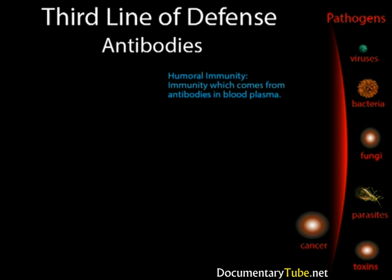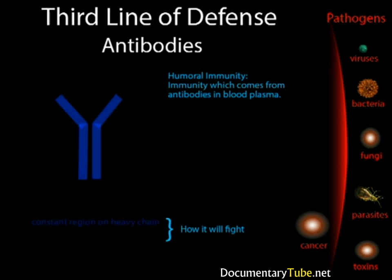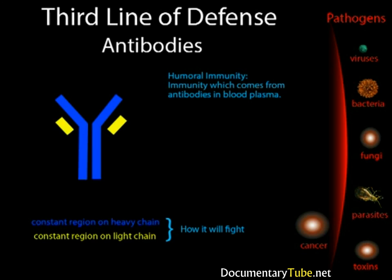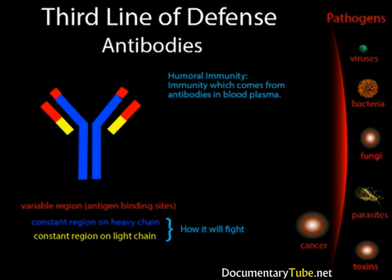Humoral immunity is an immunity which comes from antibodies in the blood plasma. Antibodies are proteins — basically made of four polypeptide chains: two identical heavy chains and two identical light chains. These chains are arranged in a Y shape. The parts in red are variable regions — these designate what invader the antibody will fight. They are antigen binding sites that allow the antibody to grab onto invaders, sort of like a key fitting into a lock. The parts in blue and yellow are constant regions, which determine how the antibody will fight. Each antibody class fights in a different way.